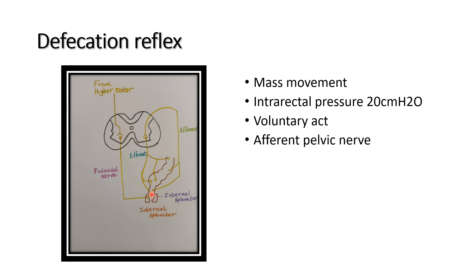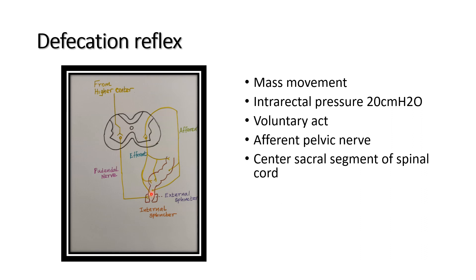The internal sphincter is made up of smooth muscle. During the resting state the external sphincter is constricted, but during defecation the external sphincter is relaxed. The afferent nerve for the defecation reflex is the pelvic nerve; the center is the sacral segment of the spinal cord; and the efferent is the pelvic nerve, which supplies the internal sphincter and rectum and colon.